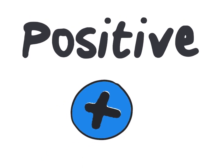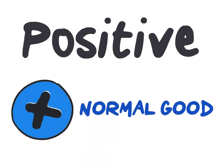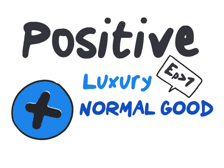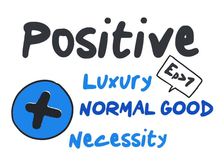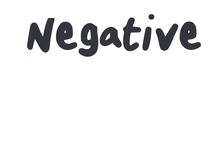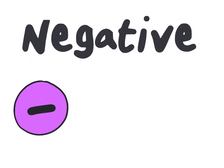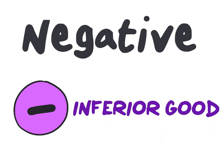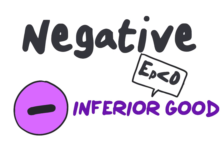If your calculated value is positive, this indicates that we are dealing with a normal good. For a normal good, an increase in income will lead to an increase in quantity demanded. If you obtain a calculated elasticity coefficient greater than 1, we know we are dealing with a luxury good. But if the positive coefficient is less than 1, we know we are dealing with a necessity. However, if your calculated value is negative, this indicates that you are dealing with an inferior good — an increase in income will lead to a decrease in quantity demanded.